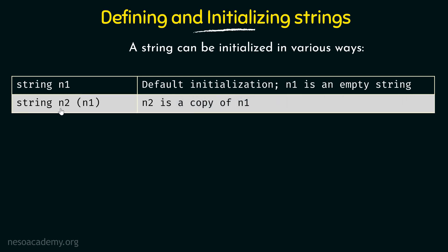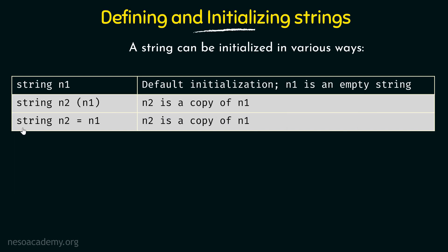Next, we have something like String n2 and within parenthesis we have n1. This means that n2 is a copy of n1 — whatever value is contained in n1 will be copied to n2. Since n1 is empty, n2 would also be an empty String. We can also write String n2 equal to n1, which is equivalent — here also n2 is a copy of n1. These two definitions are basically the same.